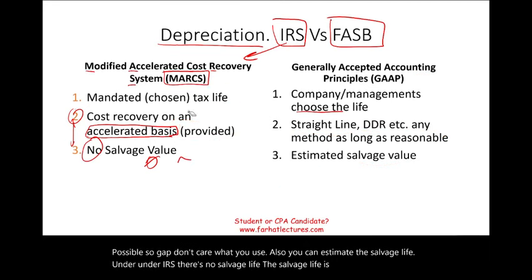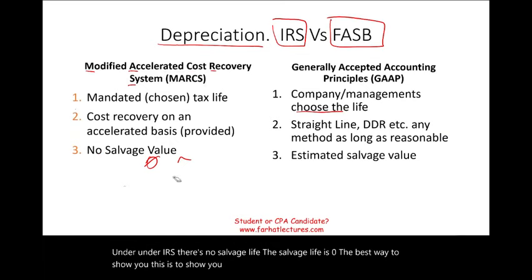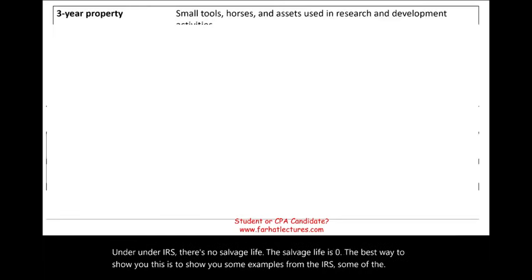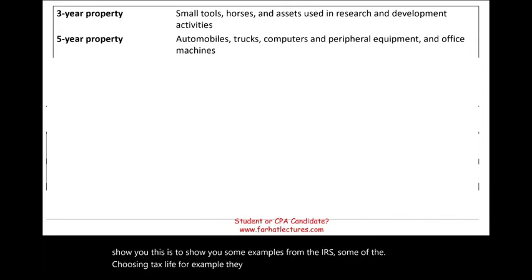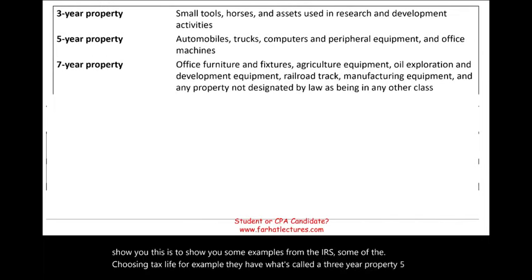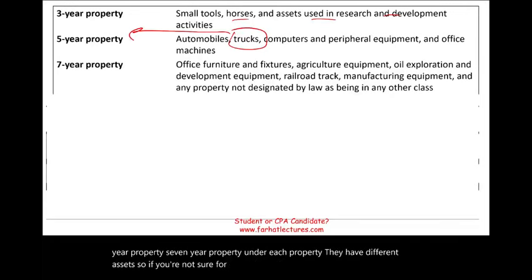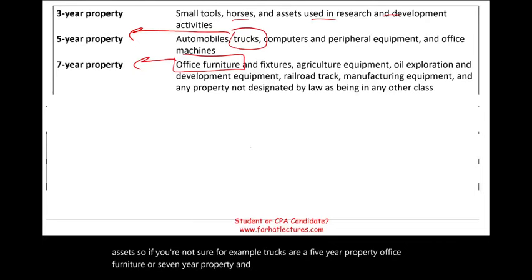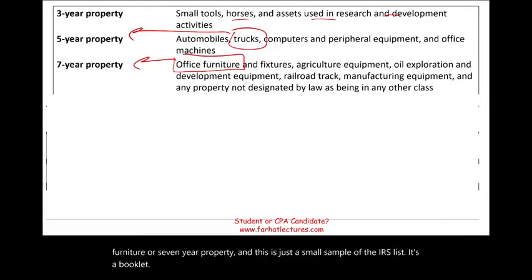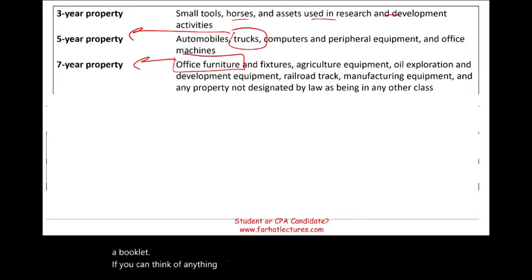The best way to show you this is to look at some examples from the IRS — some of their chosen tax lives. For example, they have three-year property, five-year property, seven-year property. Under each property they have different assets. Trucks are a five-year property; office furniture is a seven-year property. This is just a small sample of the IRS list — it's a booklet. If you can think of anything, like a calculator, they will tell you how many years you will depreciate it.